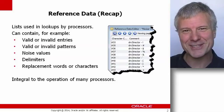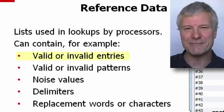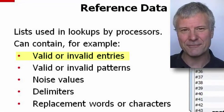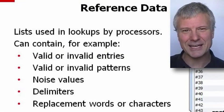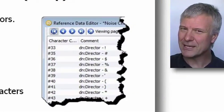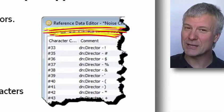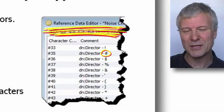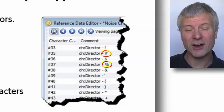There are some examples on this slide of the kind of things you can keep in reference data. Your reference data might contain lists of valid or invalid values — you can check the values in your working data against those. Or your reference data might contain delimiters or noise characters. To check for noise in a particular field, we look against reference data to see if characters like hashes, pound symbols, or percentage characters that we don't expect are present.